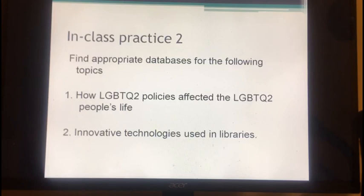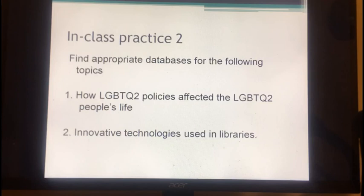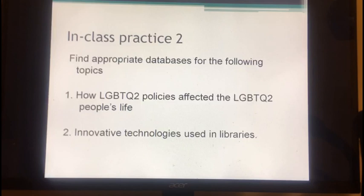Let's do a quick exercise finding appropriate databases for the following topics. Remember, the first step is always to choose the appropriate database before you search for resources. Alisa, what did you get for the first topic? She found the LGBTQ Life with Full Text database and got over 20,000 resources. You see, there's a ton of resources in the university databases and all of them are authoritative. Simon, what did you get for the second topic? He found the Library and Literature and Information Science Full Text database. That's correct. It is very quick to find authoritative resources in the university library databases — so just use the library databases for your research.